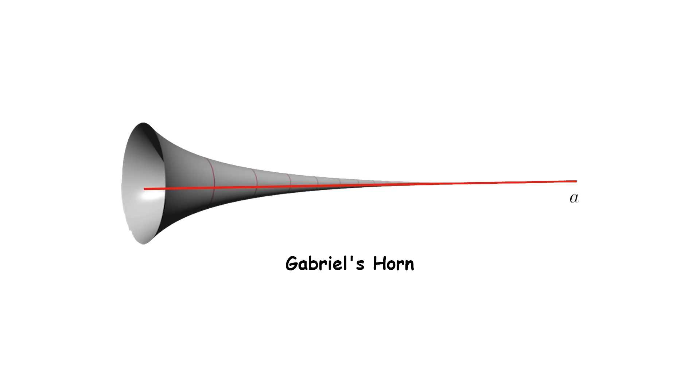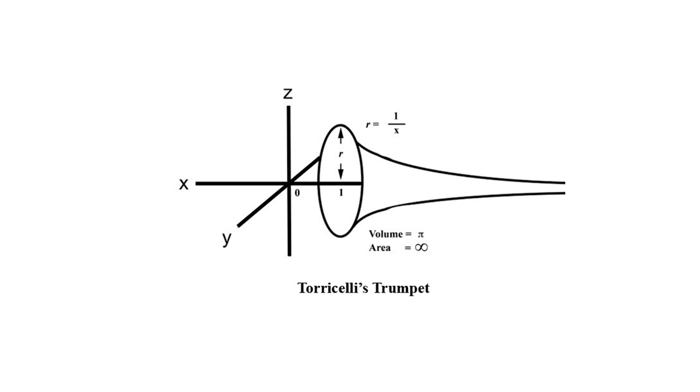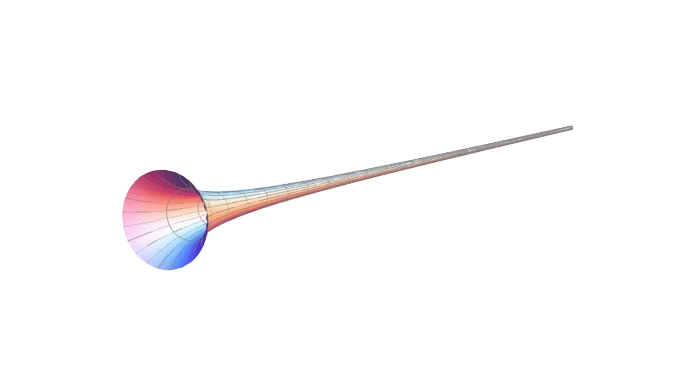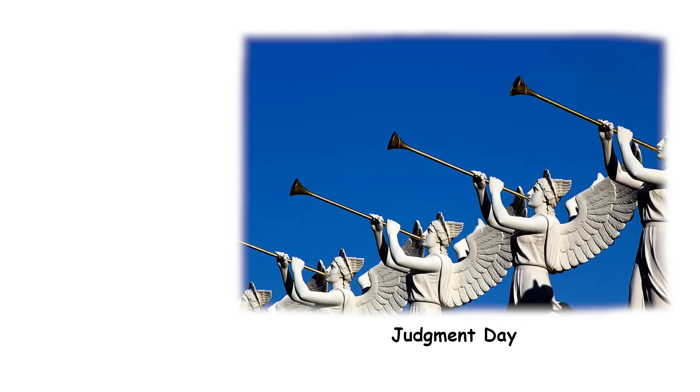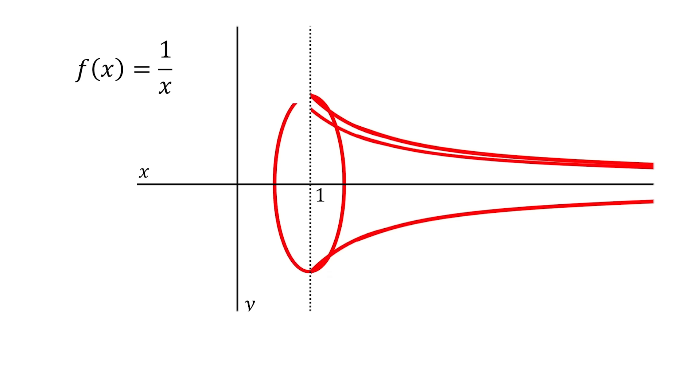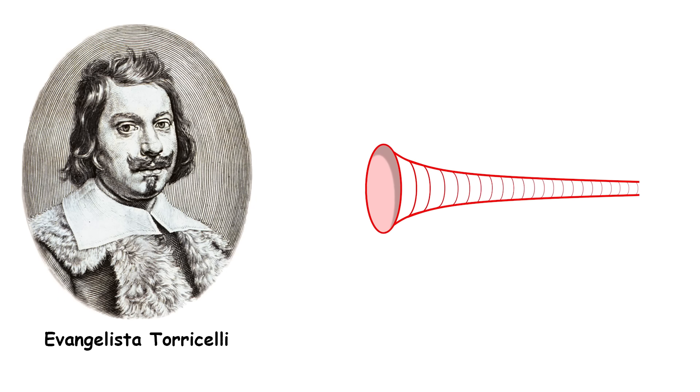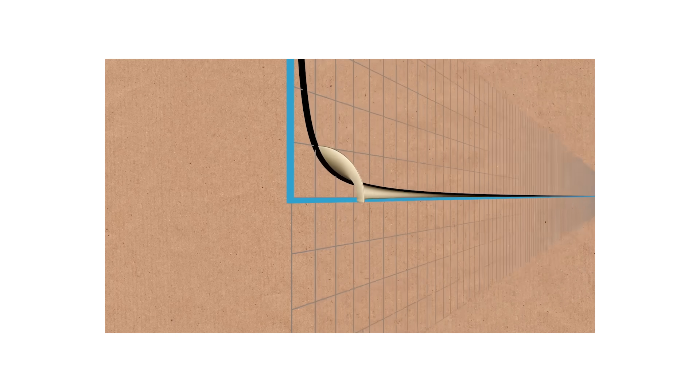Gabriel's horn, also known as Torricelli's trumpet, is a fascinating geometric shape that has an infinite surface area but a finite volume. This paradoxical figure was named after the archangel Gabriel, who is said to blow a horn to announce Judgment Day in Christian tradition. The shape was first studied in the 17th century by Evangelista Torricelli, an Italian physicist and mathematician. It's a super-long trumpet that stretches out to infinity.